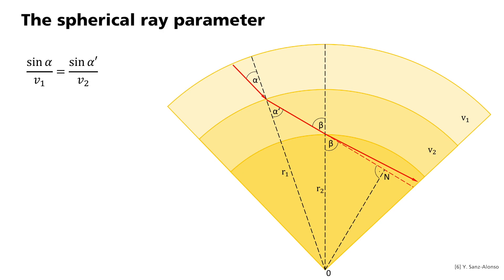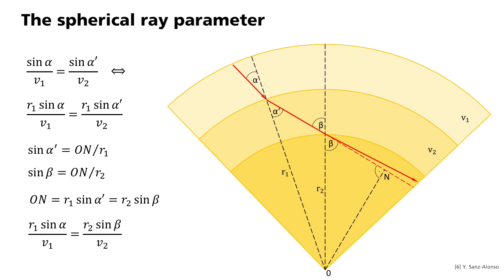According to Snell's law, sin alpha divided by v1 equals sin alpha prime divided by v2. Let me expand this with r1. In the large triangle, the following applies: sin alpha prime equals the path on divided by r1. In the small triangle, the following applies: sin beta equals on divided by r2. On is therefore equal to r1 sin alpha prime, which equals r2 sin beta. If I substitute this in the first equation, we get r1 sin alpha divided by v1 equals r2 sin beta divided by v2. Or in general, for the spherical ray parameter, p spherical equals r sin alpha divided by v.